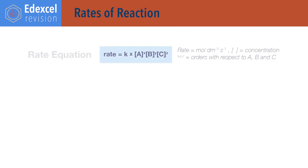For rates of reaction. Rate equals K times concentration of reactants times each other, with each raised to the power of the order of reaction with respect to the reactant. Rate has units of moles per decimetre cubed per second. K is the rate constant, with different units depending on the reaction, and concentration is given in moles per decimetre cubed.